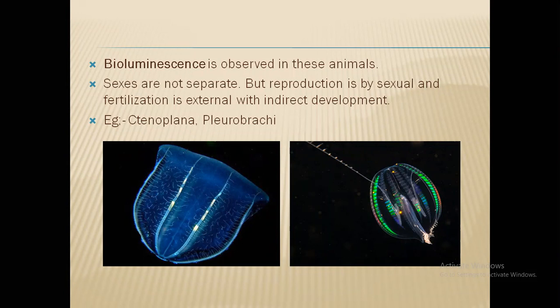So in today's class we discussed two different phyla: Phylum Coelenterata, also called Cnidaria, and Phylum Ctenophora. In the next class we will move on to the next phyla, Platyhelminthes and Aschelminthes. Thank you everyone.